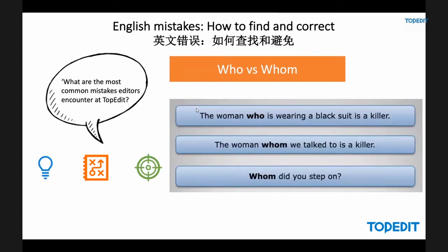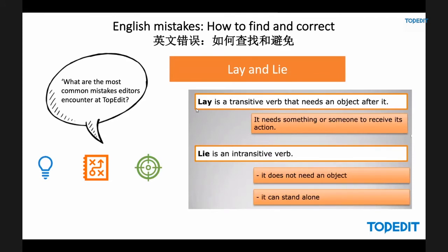Here's an example: 'The man whom gave me my proposal was my senior.' That sounds wrong because the adjective clause should use 'who' instead of 'whom' — this is the subject in the clause. The sentence should read: 'The man who gave me the proposal was my senior.' Correct examples: 'The woman who is wearing a black suit is a killer.' 'The woman whom we talked to is a killer.' 'Whom did you step on?'